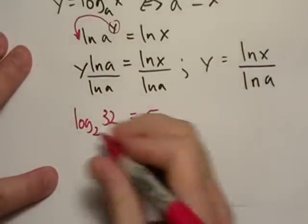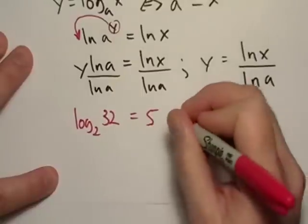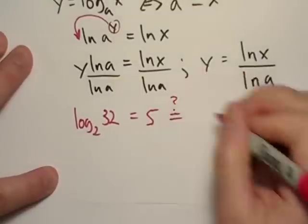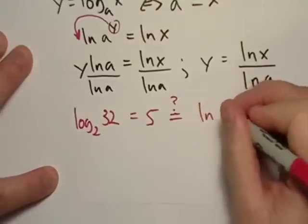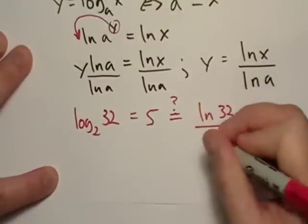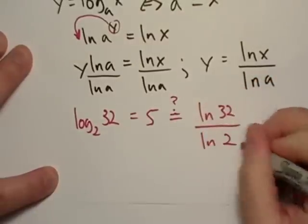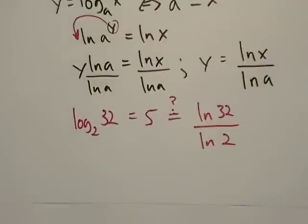So let's see here. This should be equal to the natural log of 32 divided by the natural log of two. Now this isn't the same as natural log of 32 minus two. Just don't get that confused. That's log 32 divided by log two. So really the only way to do that is actually use your calculator.